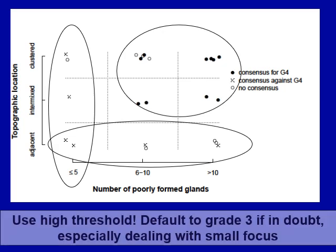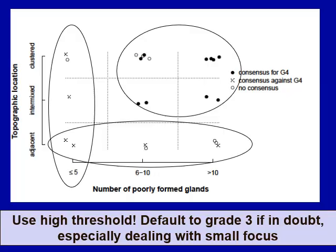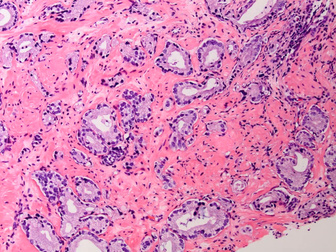The important message from this study is that you should use a high threshold and be conservative with this particular pattern. Whenever you are in doubt, default it to grade 3. This is especially critical when you are dealing with a small focus of prostate cancer. Here is an example where several apparently poorly formed glands are seen throughout the biopsy, but this is likely due to tangential sectioning, so it is graded as Gleason 3+3=6.